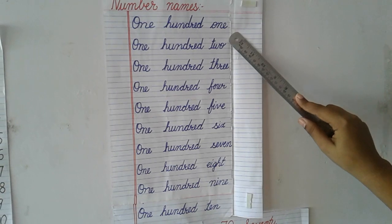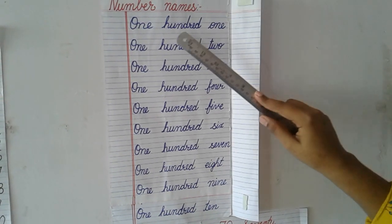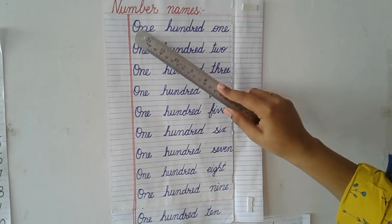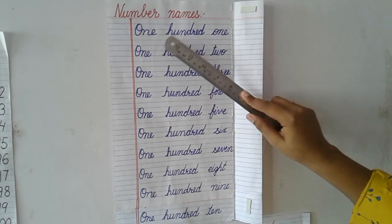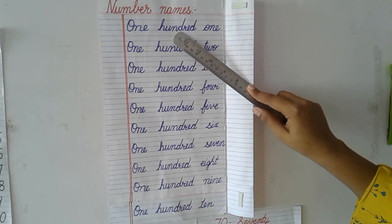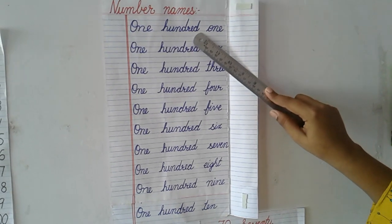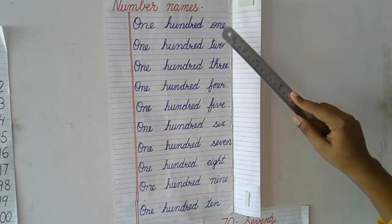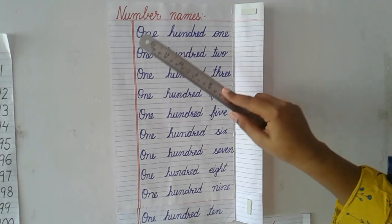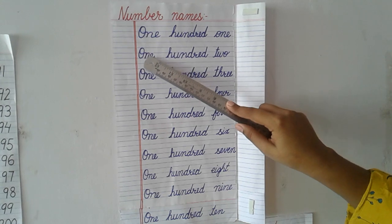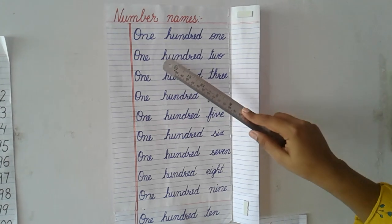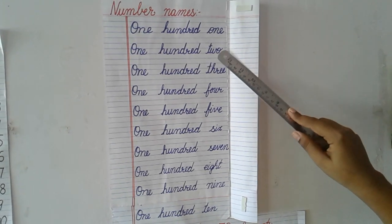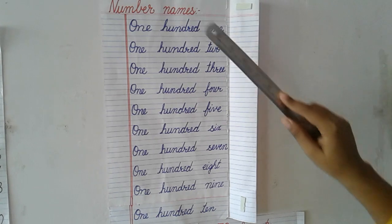101 — we write ONE HUNDRED ONE. 102 — we will write ONE HUNDRED TWO. You can see, student: in the ones place we are changing the spellings, but in the tens and hundreds place the spellings are the same.